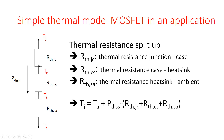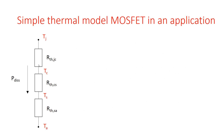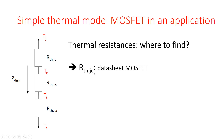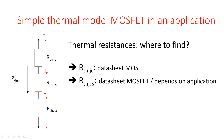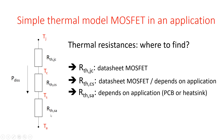Where can you find the relevant information? The thermal resistance between junction and case (RTH_JC) can mostly be found in the datasheet of the MOSFET, typically on page one. The thermal resistance between the case and the heatsink depends on your application, and the datasheet sometimes provides guidance. The thermal resistance between the heatsink or PCB and ambient depends on your application — for instance, the size of your copper area on your PCB or the size of your external heatsink.